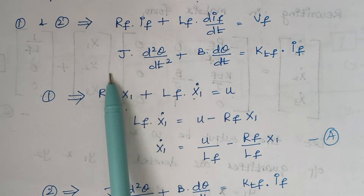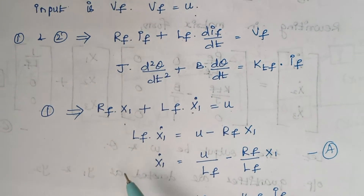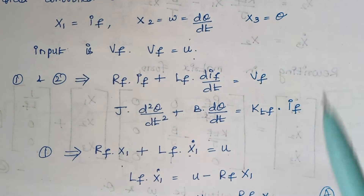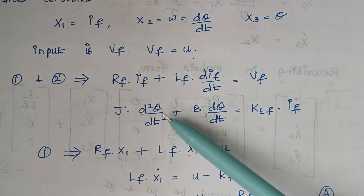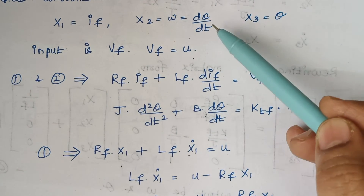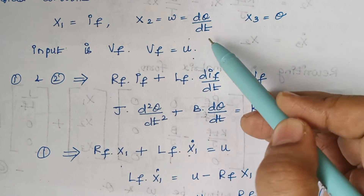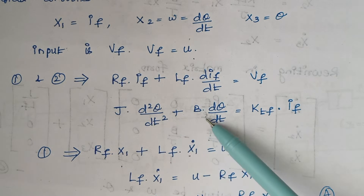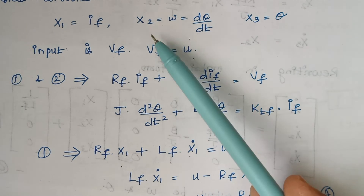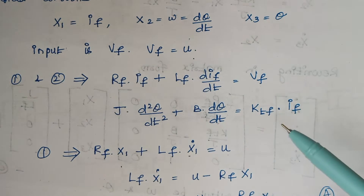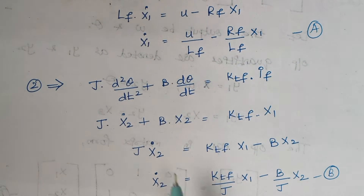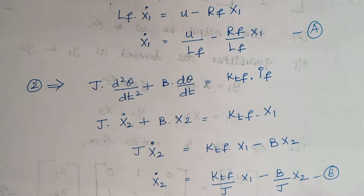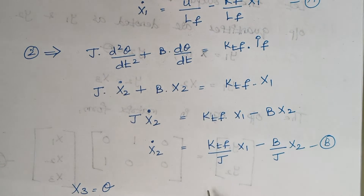Rewriting Equation 2: since dθ/dt = X2, then d²θ/dt² = X2-dot. So J·X2-dot + B·X2 = KTF·X1. Rearranging: X2-dot = (KTF/J)·X1 − (B/J)·X2. Mark this as Equation B.